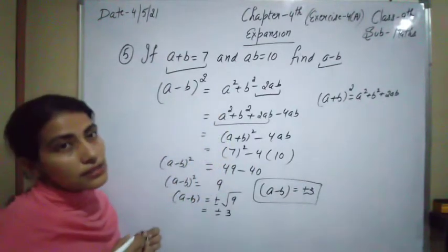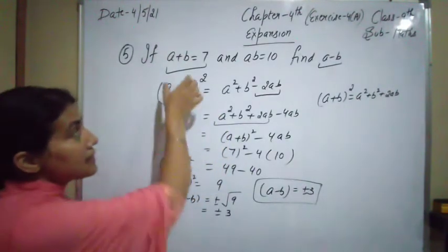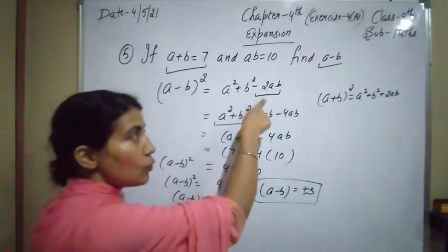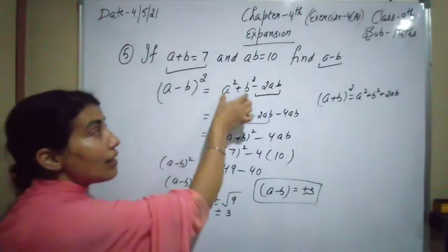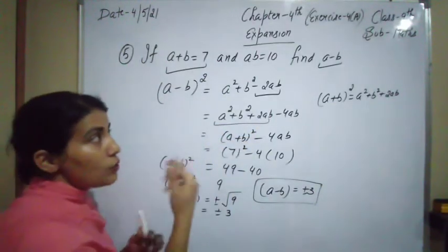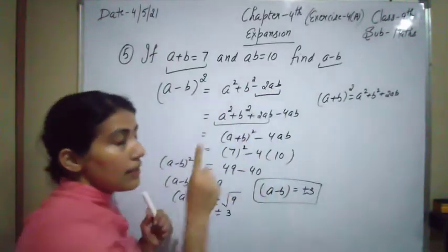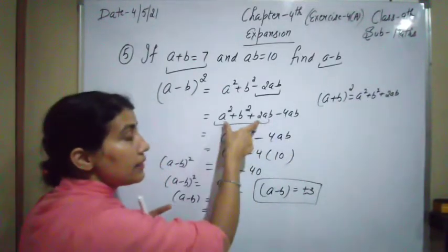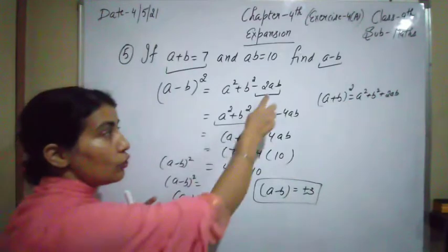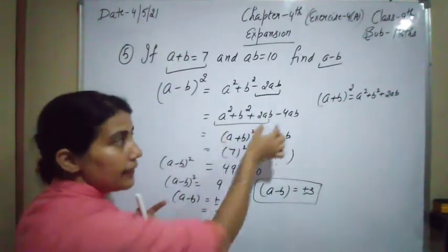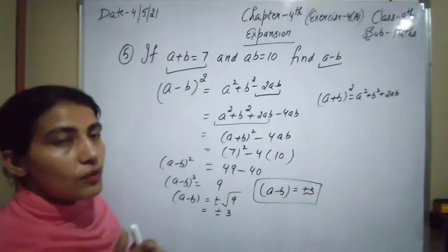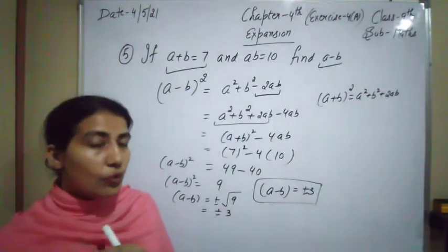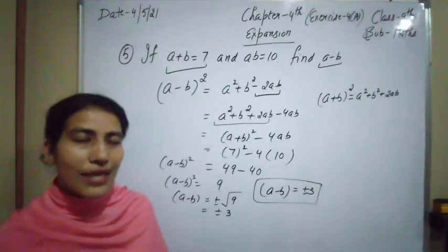To summarize: a + b and ab are given, we have to find a − b. Always start from the square. Use the identity, convert it into the form of a + b by splitting −2ab into 2ab − 4ab, apply the given values, and calculate. All five questions are now clear. Tomorrow we'll start a new one. Thank you so much everyone.